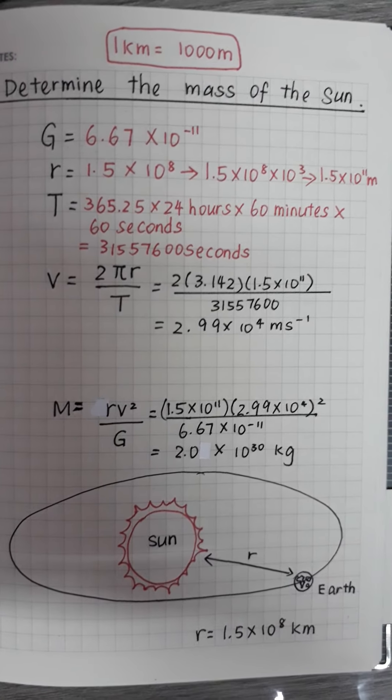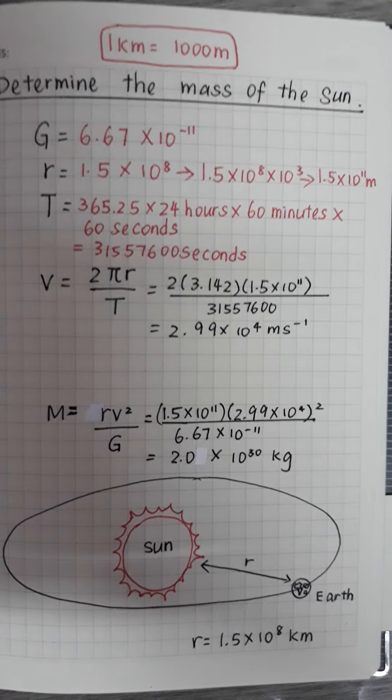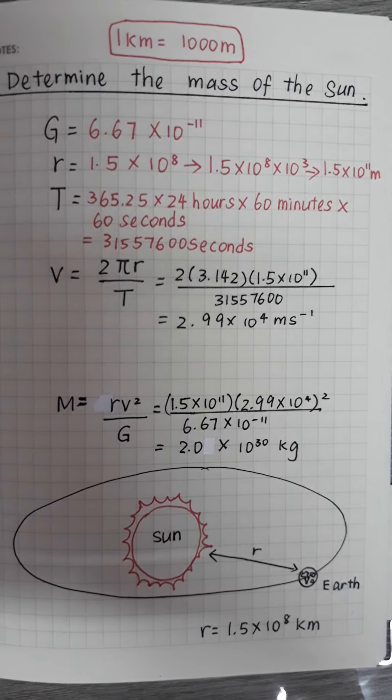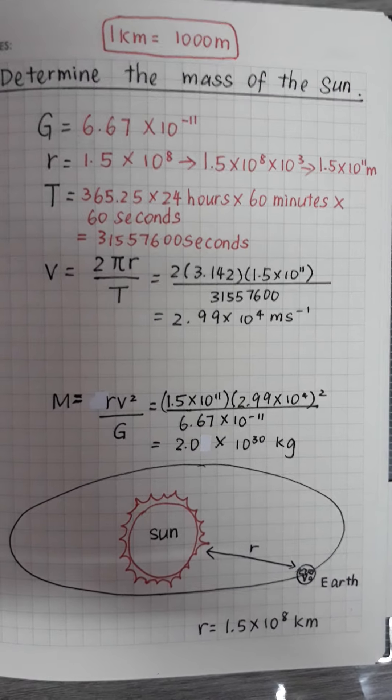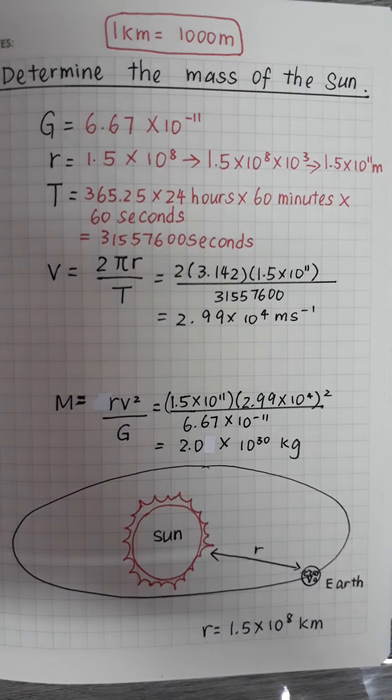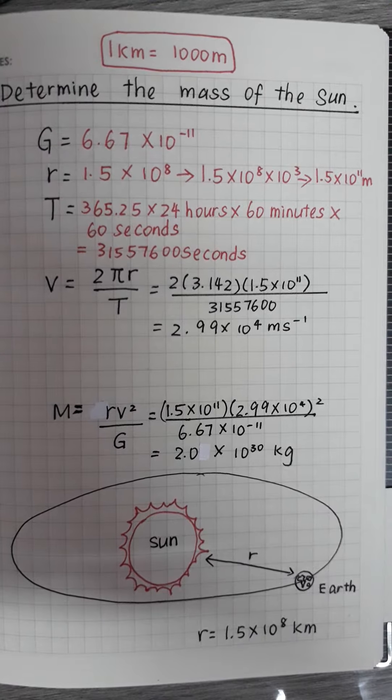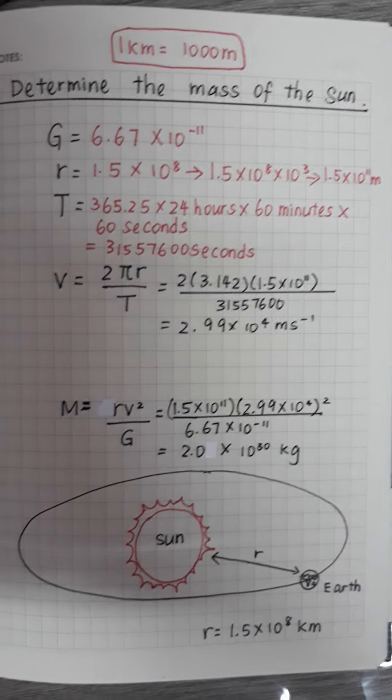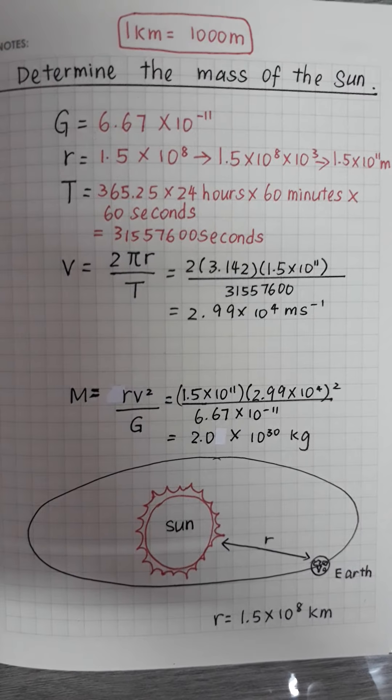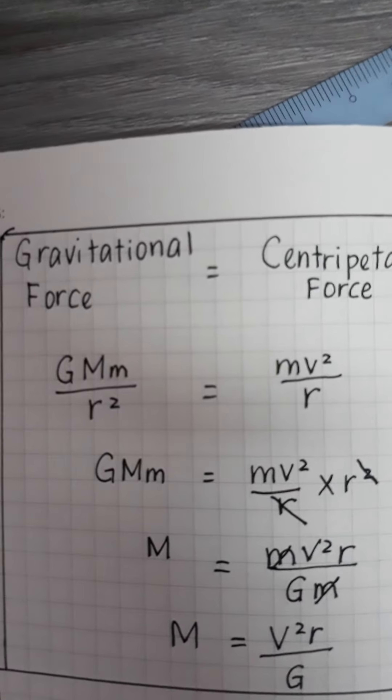of the sun on the earth is the centripetal force that causes the earth to orbit around the sun. So we can use the Newton universal law of gravitation to determine the mass of the sun. So now look at the formula.